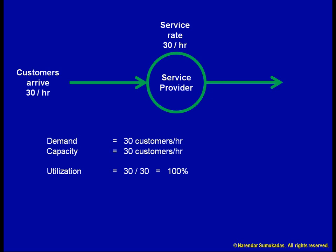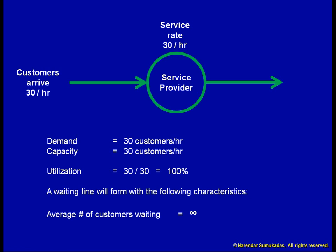Let us see what would happen if we utilize such a system for a fast food counter. Although customers arrive at a rate of 30 per hour on average, there is variability in the arrival pattern. Likewise, although customers are served at a rate of 30 per hour, or 1 every 2 minutes, there is variability in the service pattern. Given this variability in the arrival and service patterns, we can estimate that a waiting line will form. The average number of customers waiting in the line will be infinity, and to reach the counter, they will wait for an eternity.